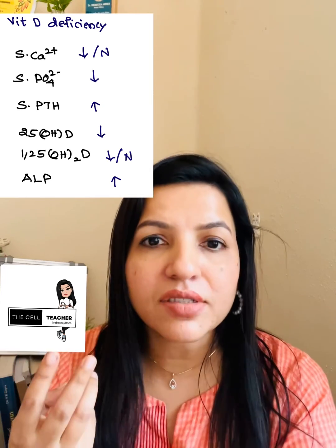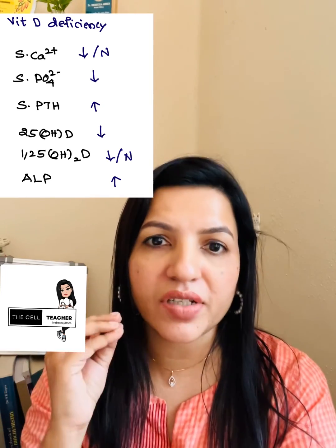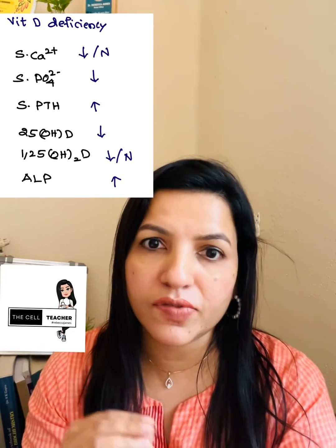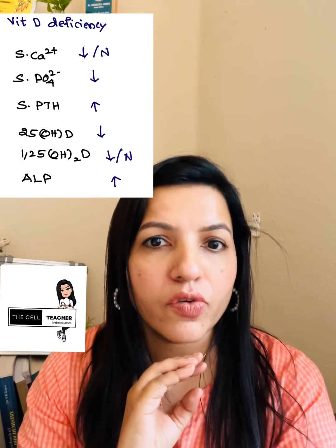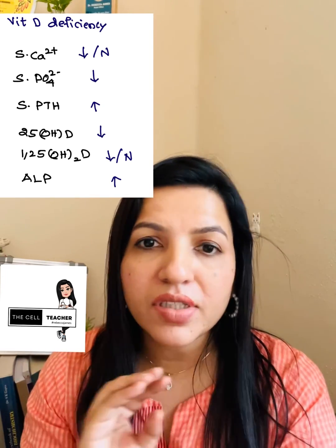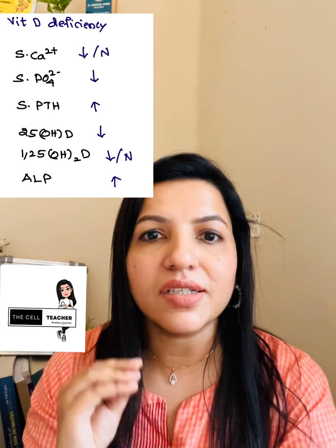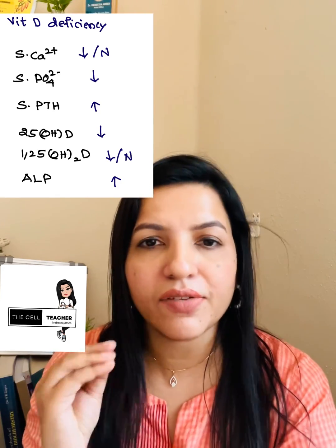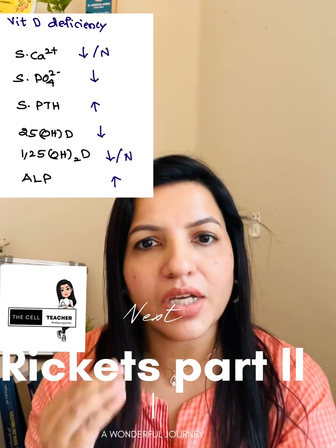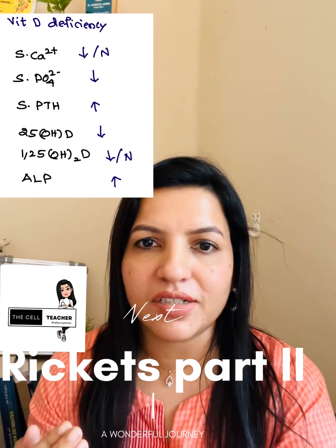The next biochemical finding is alkaline phosphatase. Whenever there is increased osteoblastic activity, alkaline phosphatase is elevated, so it is elevated in nutritional rickets.